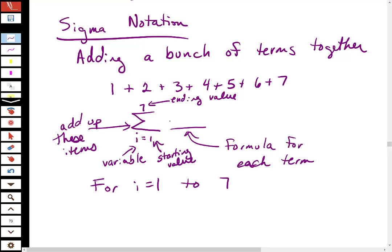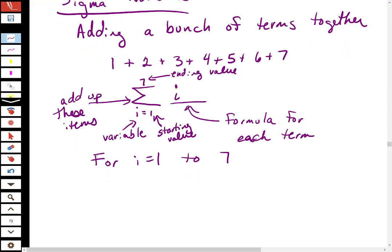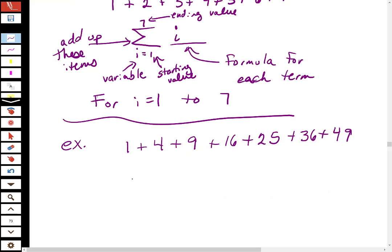But in this case, the formula that gives me this is just I, right? And let's say I do a slightly different one. Let's say I did all of the numbers squared. So, like, 1 plus 4 plus 9 plus 16. I'm still going to go to 7 plus 49. So I still have 7 terms. I'm still using this same I equals 1 to 7. But now, instead, my formula is going to be I squared.